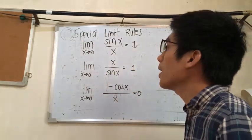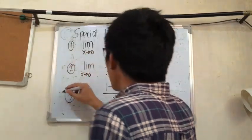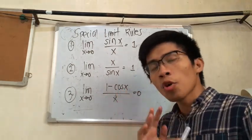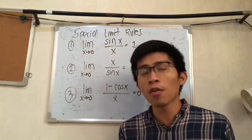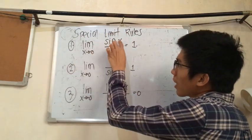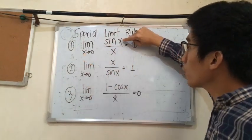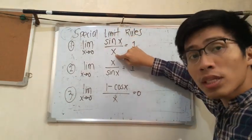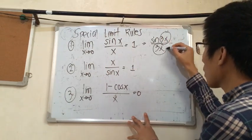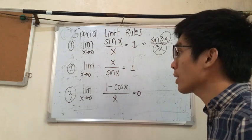So in my previous video, I presented to you different special limit rules — three different special limit rules involving only sine and cosine. The limit of sine x over x as x approaches zero is equal to one. Make sure that the variable inside the sine function is the same as the variable in the denominator. For example, sine 3x over 3x — since 3x and 3x are the same and x approaches zero, the limit is equal to one.